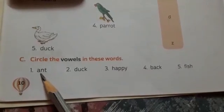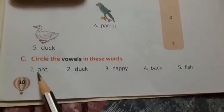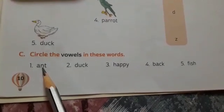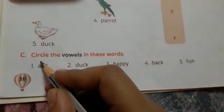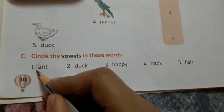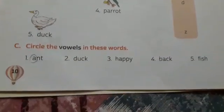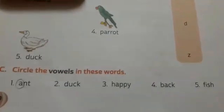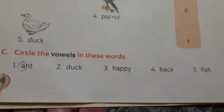The first word is AND — A, N, D. In AND, the vowel is A, so you have to circle A, because A is a vowel.